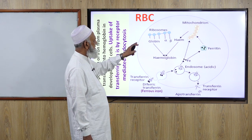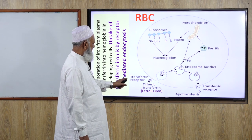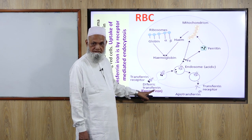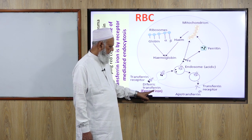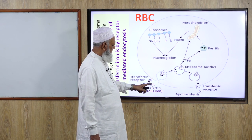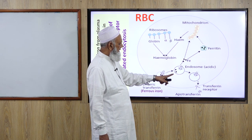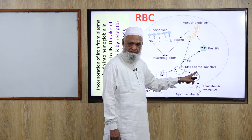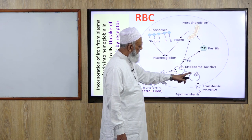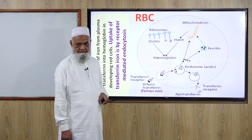This is a picture of an RBC — a nucleated RBC. Shown are the transferrin receptors, with diferric transferrin in ferrous form. Ferrous iron undergoes endocytosis along with the receptor. The endosome becomes acidic, activating enzymes in the acid state, which releases the iron while the receptor returns to the cell membrane.